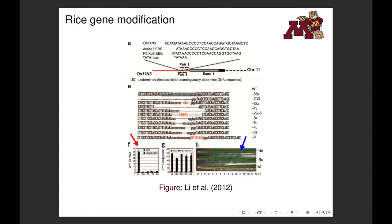Basically, the bacteria Xanthomonas uses a TAL system to increase the transcription of a rice gene, which encourages the transport of sugars to infected cells. The researchers were able to use TALENs to produce several rice mutant lines, and they were able to demonstrate that transcription of the susceptibility gene was significantly lower in some of the mutants compared to the wild type when infected with Xanthomonas.